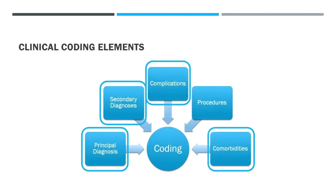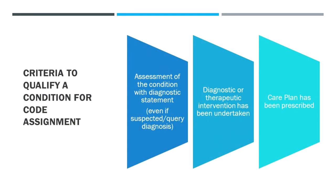Every clinical admission and encounter is coded according to the principal diagnosis. It's the secondary diagnoses — the complications of the principal diagnosis and the associated comorbidities — that add complexity to those encounters. To qualify for a condition code, you need an assessment with a diagnostic statement, some kind of intervention or diagnostic process, and an appropriate care plan. Most of the time these three are easily satisfied, but each time something is coded you need to tick those three boxes.